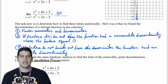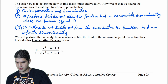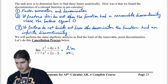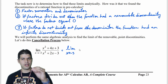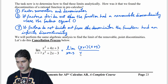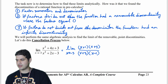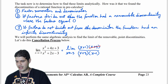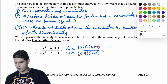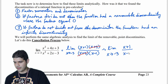Let's actually perform this cancellation process, starting by factoring the numerator and denominator. This is equal to the limit as x approaches negative 3. In the numerator, I have (x + 1)(x + 3), and in the denominator, I have (x + 3)(x − 1). Notice that (x + 3) appears in both — those are going to divide out. So what we have left over is the limit as x approaches negative 3 of (x + 1) over (x − 1).